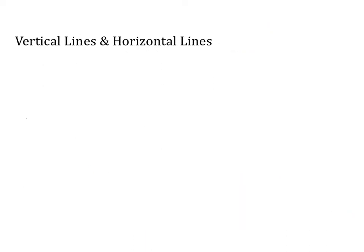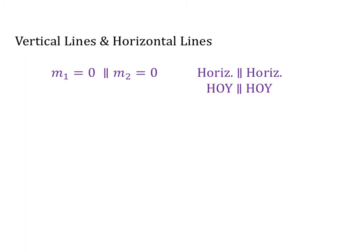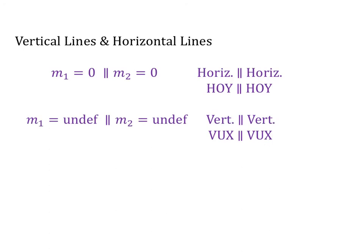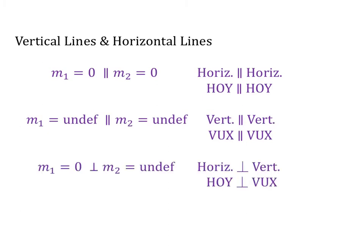Now let's discuss vertical and horizontal lines. Horizontal lines have a slope of 0, so a slope of 0 is parallel to a slope of 0 — a horizontal line is parallel to a horizontal line. If you have two y equals equations, those two lines are going to be parallel. If you have two undefined slopes, those two lines are going to be parallel, so a vertical line is parallel to a vertical line — meaning an x equals equation is parallel to another x equals equation. And a 0 slope is perpendicular to an undefined slope, because a horizontal line is perpendicular to a vertical line, so a y equals equation is perpendicular to an x equals equation.